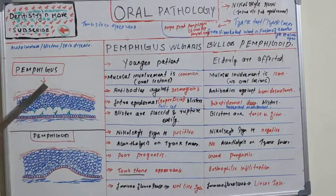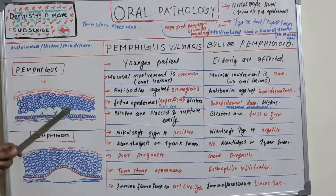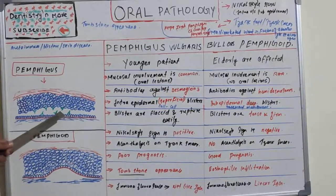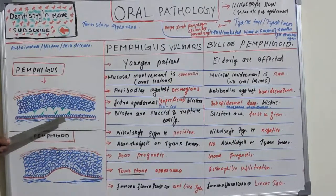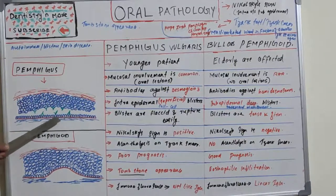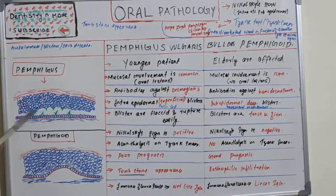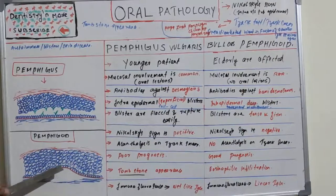In pemphigus, intra-epidermal means there is acantholysis — the detachment of cells — where cell adhesion is lost between the epithelial layers. The basal layer is intact here. So the blister is forming within the epithelium, that is intra-epidermal blister formation.